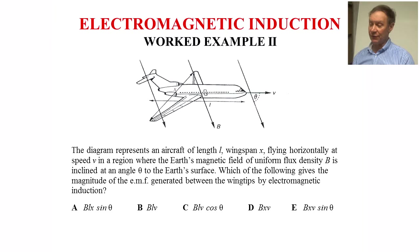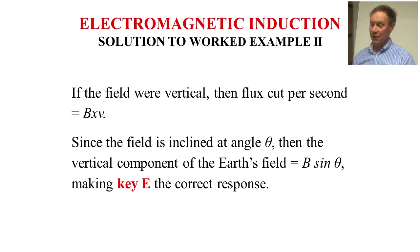Worked example two. The diagram shows an aircraft of length L wingspan X flying horizontally at speed V in a region where the Earth's magnetic field of uniform flux density B is inclined at the angle theta to the Earth's surface. Which of the following gives the magnitude of the EMF generated between the tips of the wings by EM induction? Again, the answer will follow shortly.